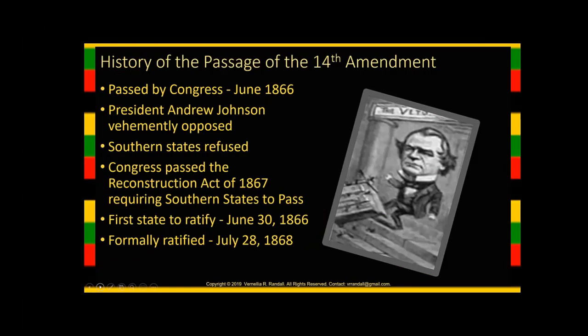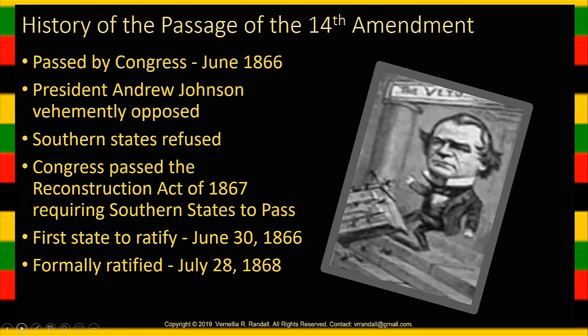The 14th Amendment — I want to talk about the history of its passage. In order to amend the Constitution, a process has to occur. The amendment can start in Congress or in the states, and so it started in Congress, which passed it in 1866 as one of the Reconstruction Amendments. Then it has to be ratified by two-thirds of the states.